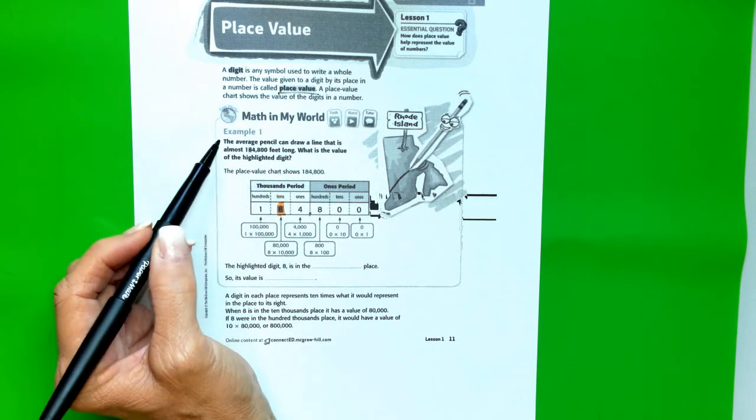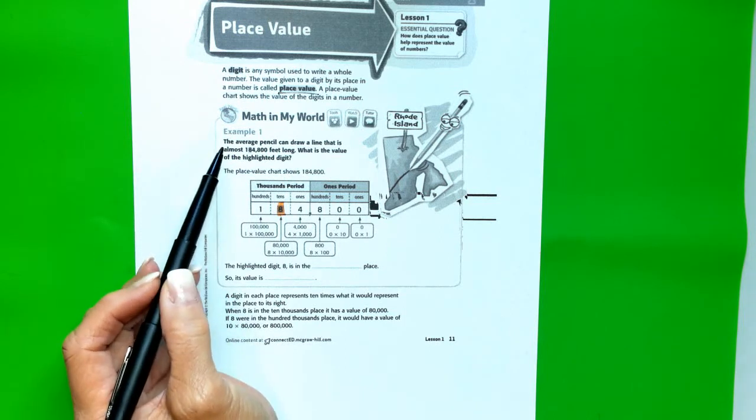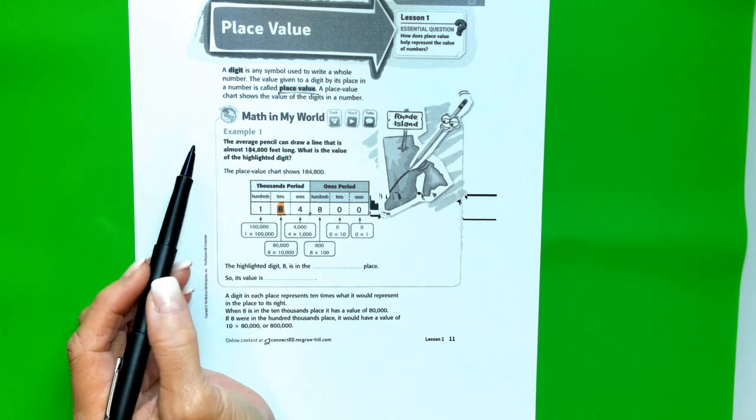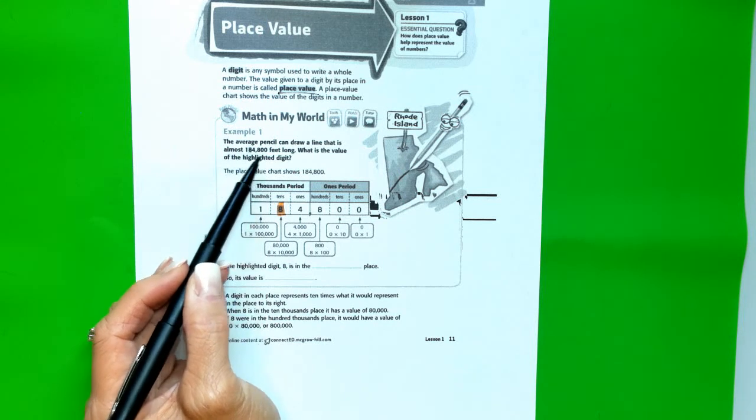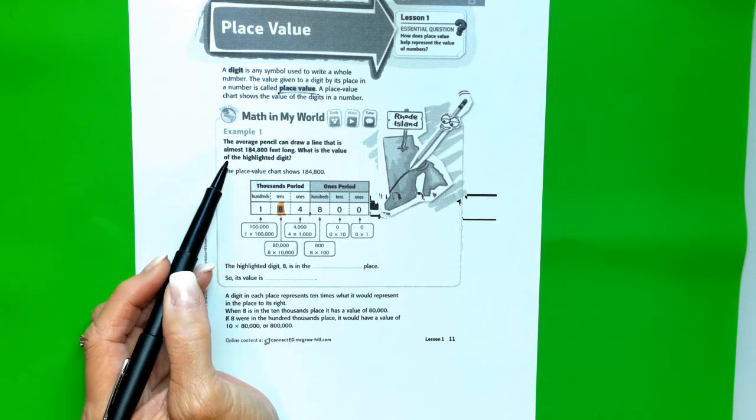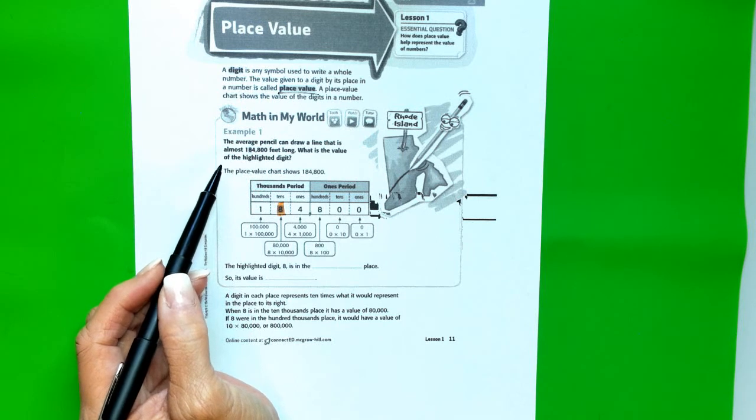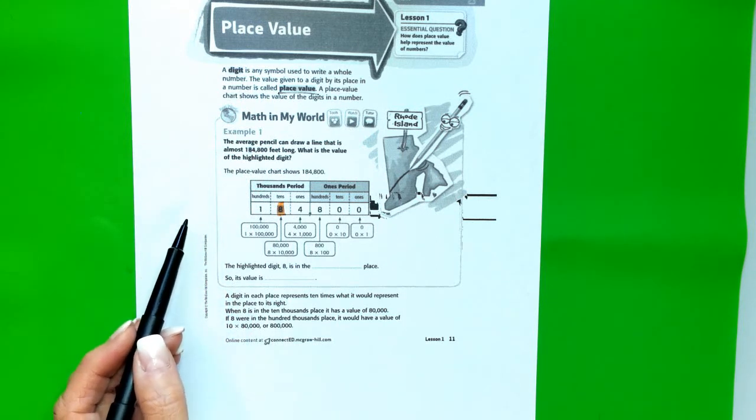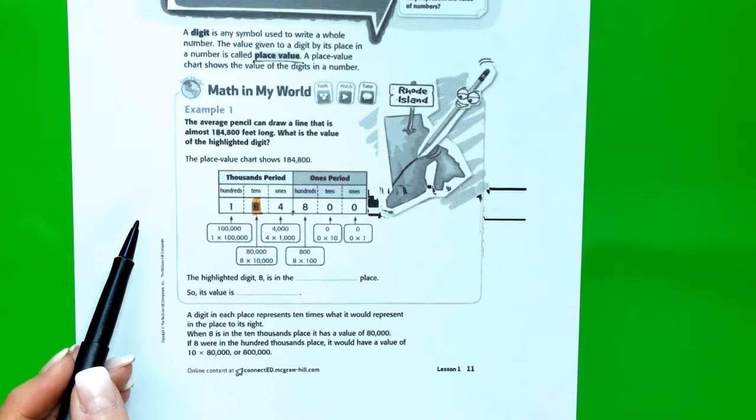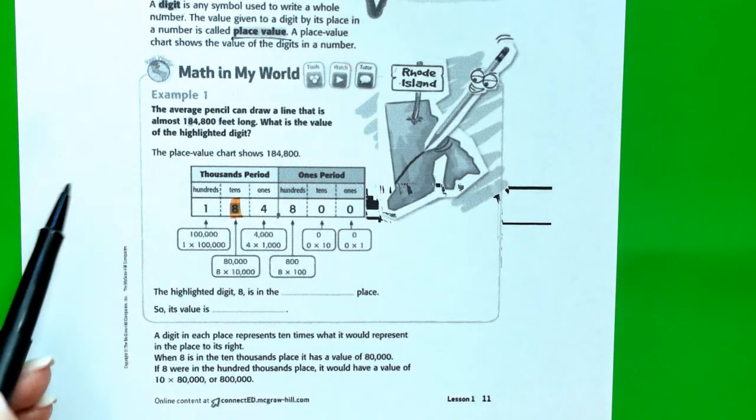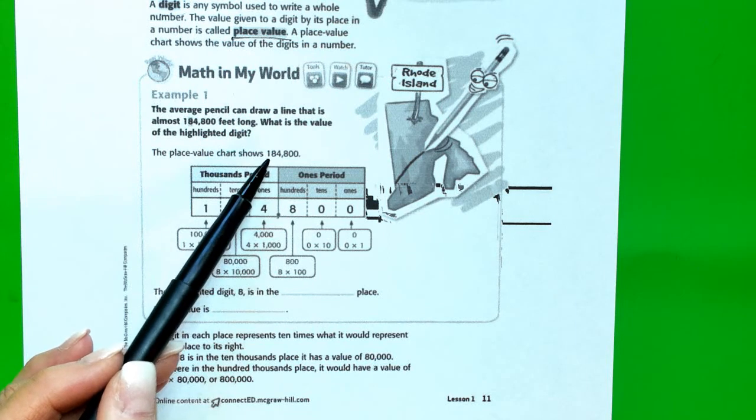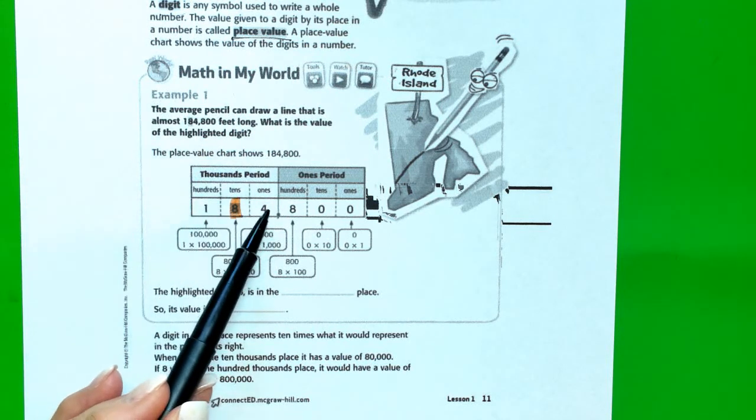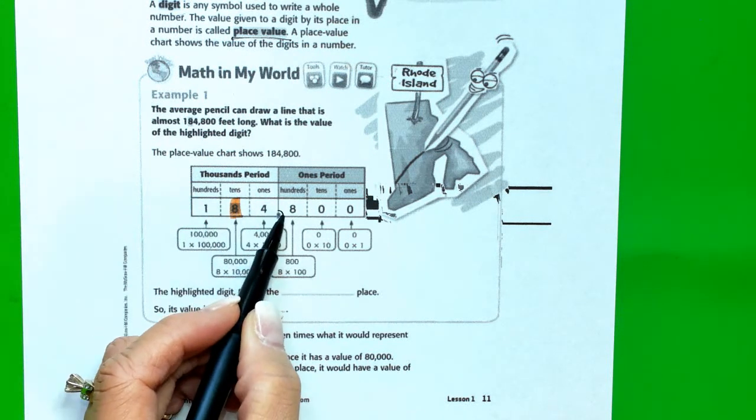So let's look at example number 1. It says the average pencil can draw a line that is almost 184,800 feet long. What is the value of the highlighted digit? I'll zoom in a little bit because I had to make a black line of this. So here you can see the place value chart shows 184,800.